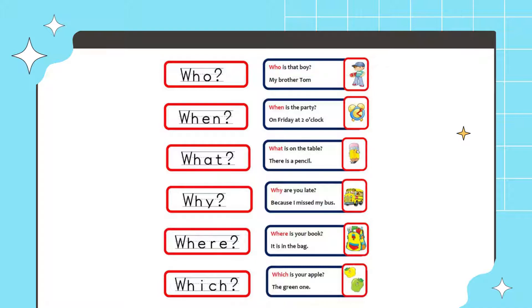Number three, what is on the table? There is a pencil. Number four, why are you late? Because I missed my bus. Number six, where is your book? It is in the bag. And the last one, which is your apple? The green one.